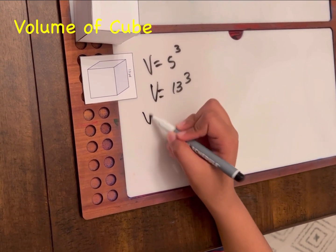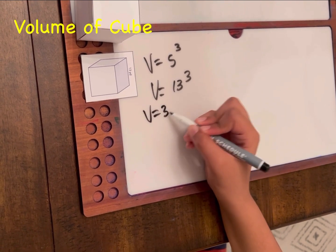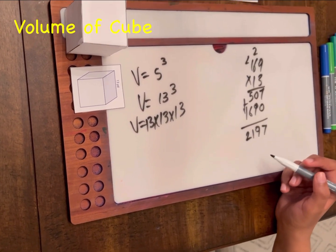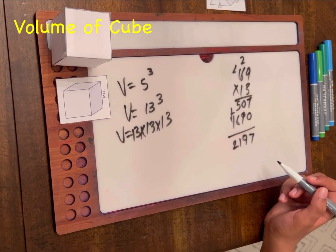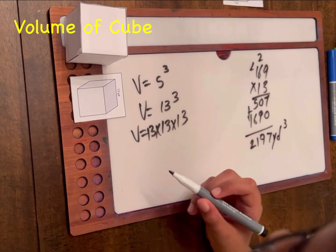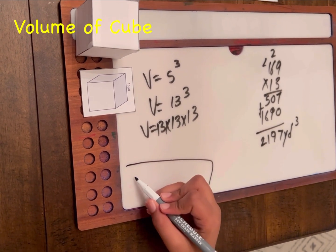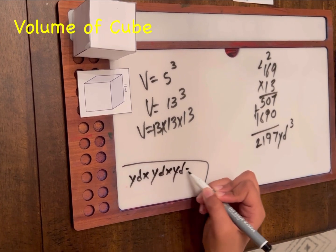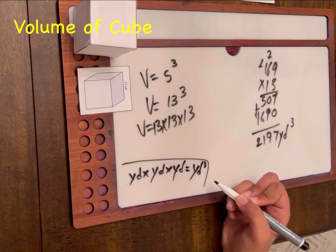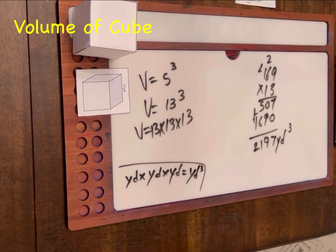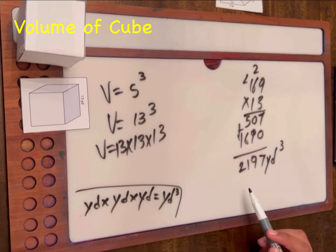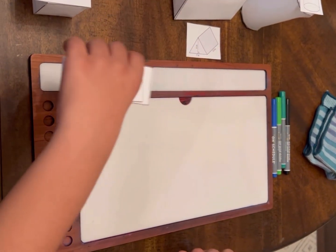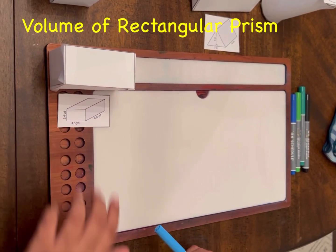That is equal to 13 times 13 times 13. The answer is 2197 yards cubed. The reason why we say cubed is that yard times yard times yard is equal to yard to the power of 3, and yard to the power of 3 is also yard cubed. So in this scenario it will be 2197 yards cubed.